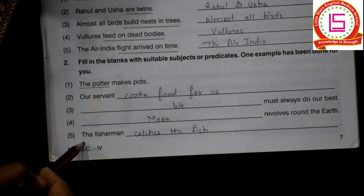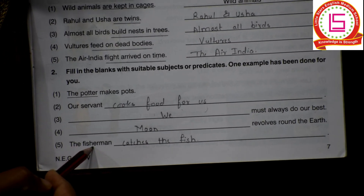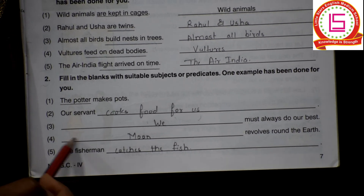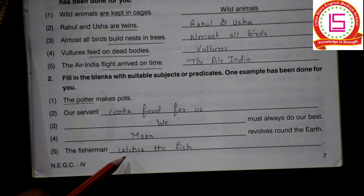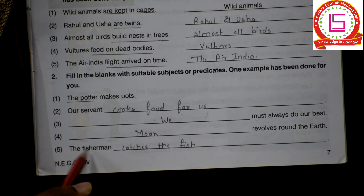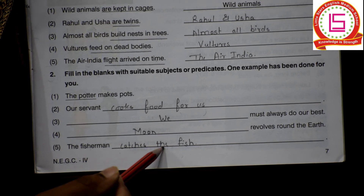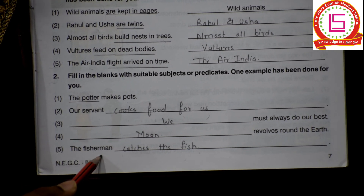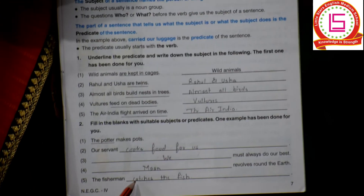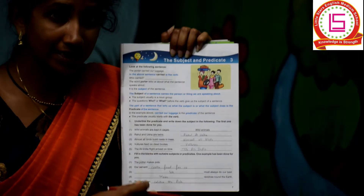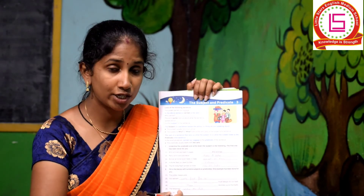The last one: the fisherman dash. What does the fisherman do? The fisherman is the subject, and we have to write the predicate — catches the fish. So the fisherman catches the fish. The subject is the fisherman, and your predicate will be catches the fish. So we have completed our lesson. You have to just revise and write in your notebook. Thank you.